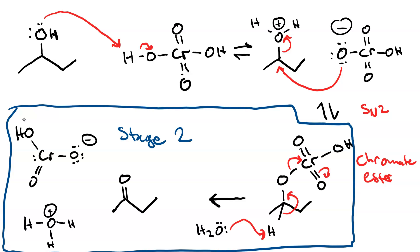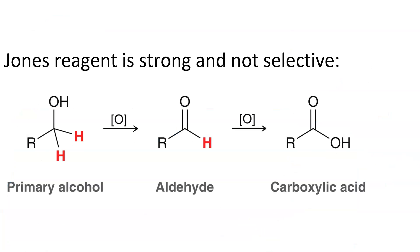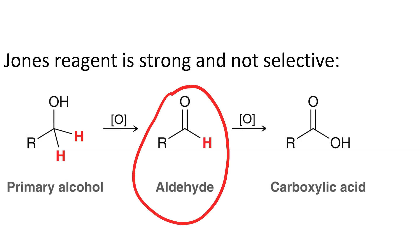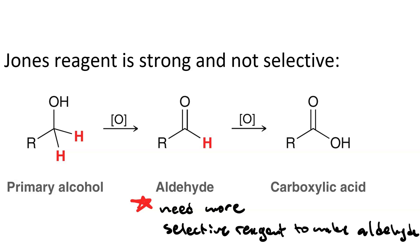Stage 2 is slower and not reversible. Jones reagent is strong and not selective — meaning it will oxidize as far as it can go. If you start with a primary alcohol, Jones reagent will take you all the way to a carboxylic acid. So you'd need something more selective if you wanted to stop at an aldehyde.